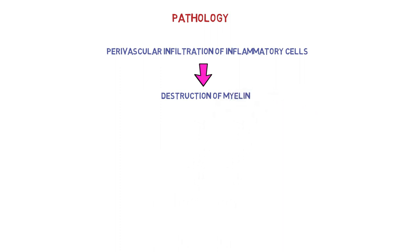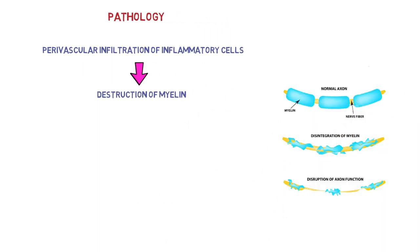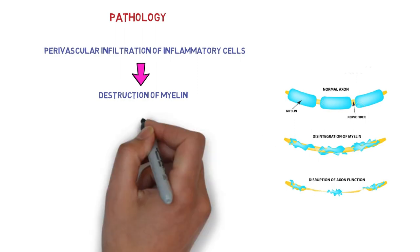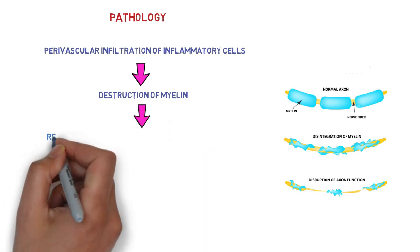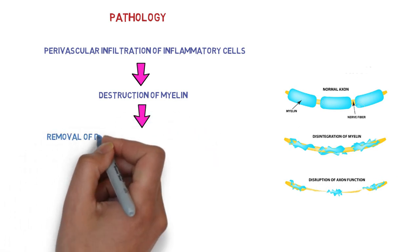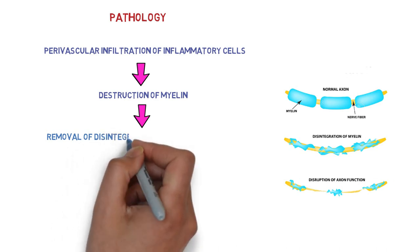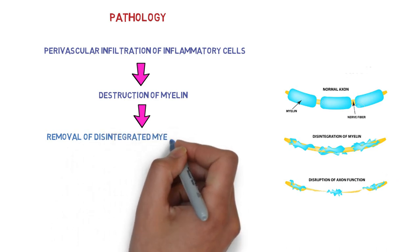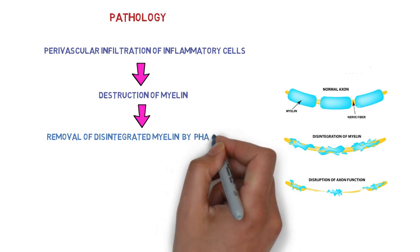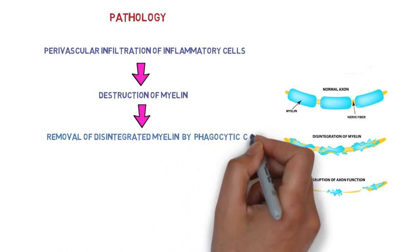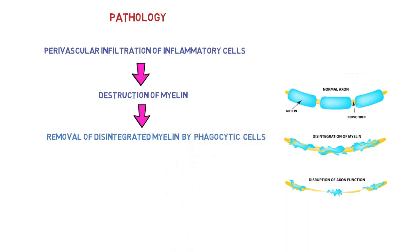Look over this diagram - this is normal axon and here we have the myelin. Due to perivascular infiltration, there is destruction of myelin. This disintegrated myelin is removed by phagocytic cells. That is the third step in pathology - removal of disintegrated myelin by phagocytic cells.